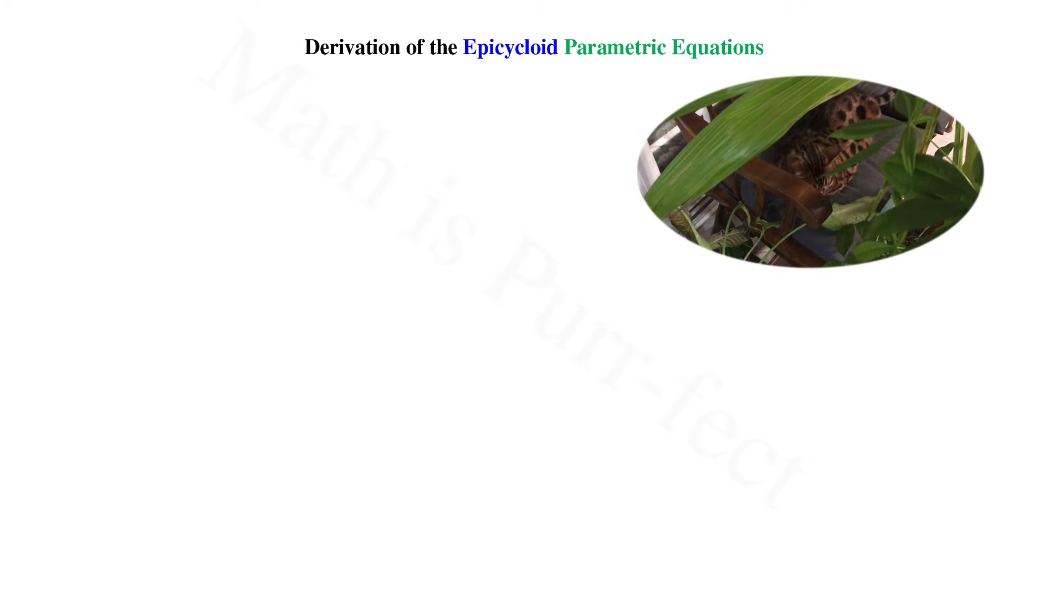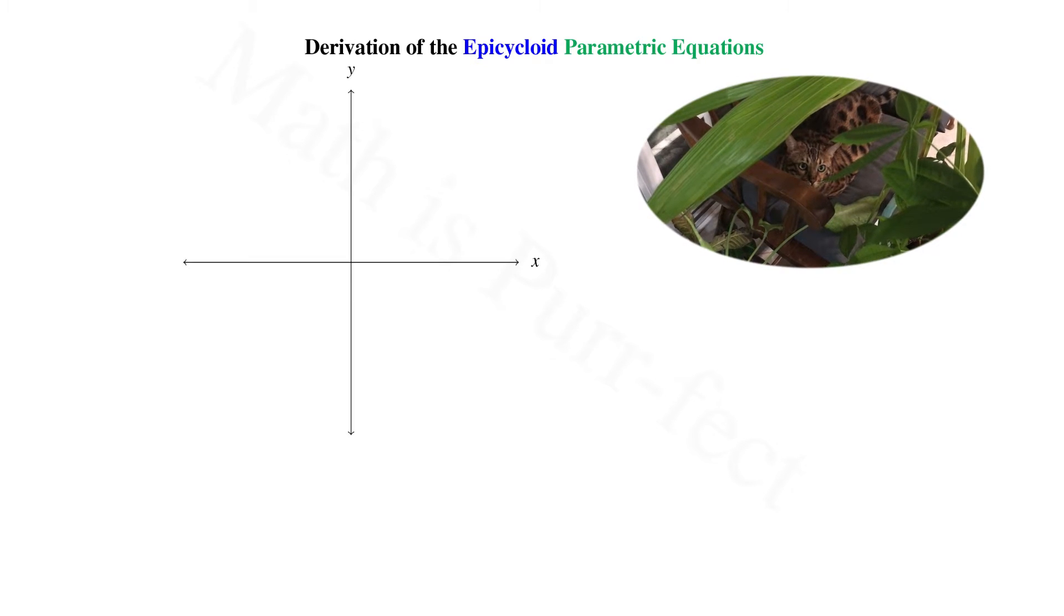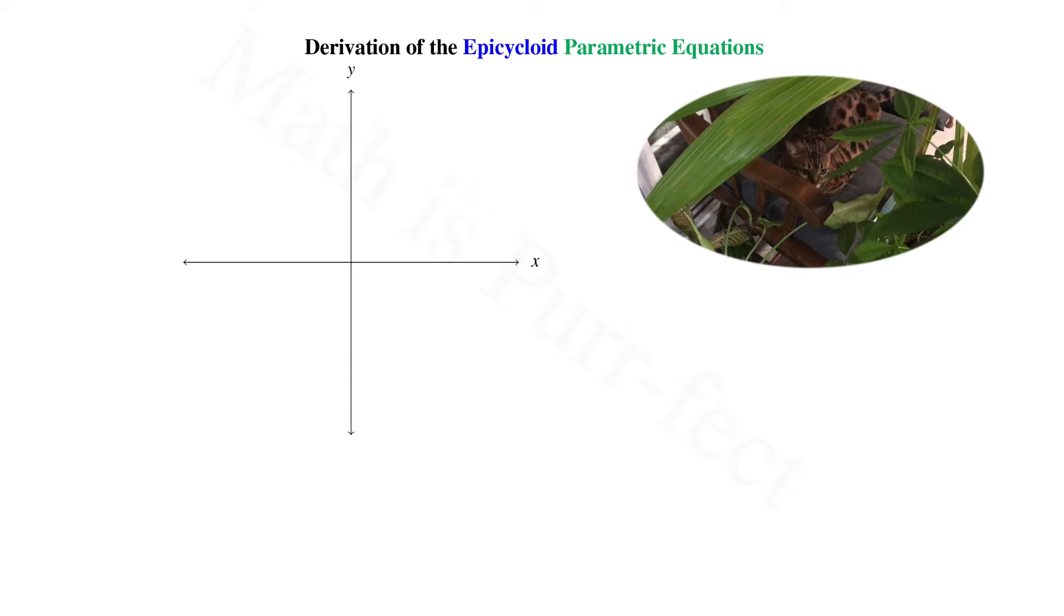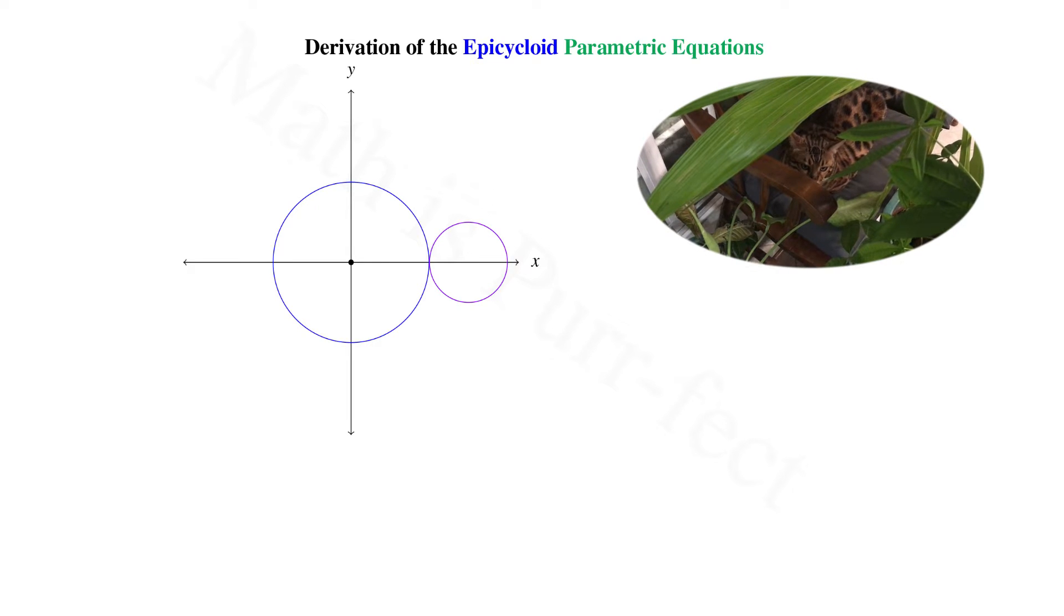that is, the curve created by a fixed point of a given circle as it rolls about the circumference of another. To illustrate this, let's consider a fixed circle centered at the origin, and a second circle tangent to the first along the positive x-axis.